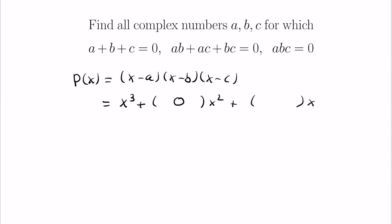Now the x term of the expansion is going to be the sum of the pairwise products. And that is zero as well, so we have a zero here. And finally, we'll have the negative of the product of the roots as our constant coefficient, and that's zero. And so this polynomial actually is x cubed.